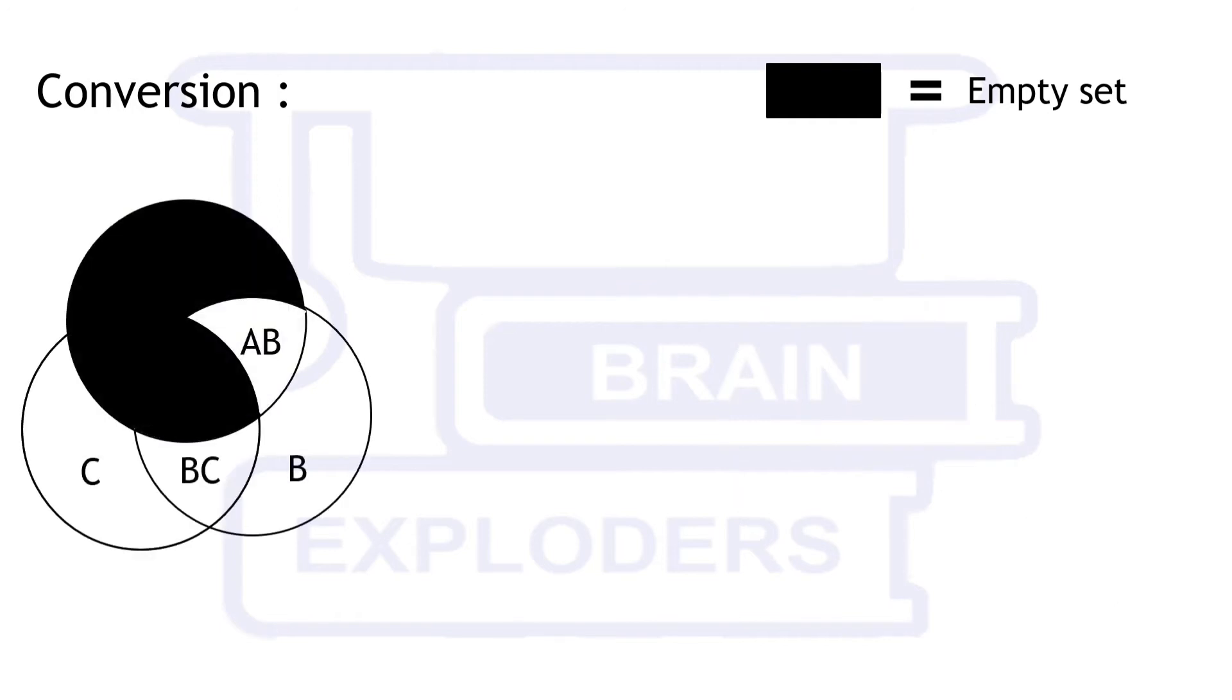In this example, C and B have some elements in common. All elements of A are the elements of B also, but there is no common element between A and C. On removal of all these empty sets, we get the corresponding Euler diagram.